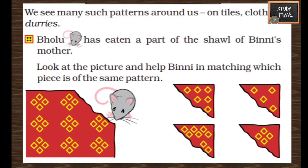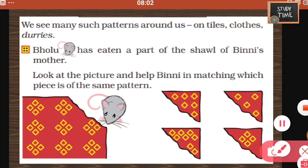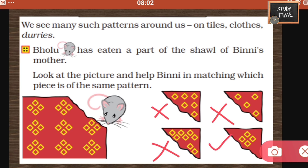We see many such patterns around us on tiles, clothes, and dresses. A rat has eaten a part of the shawl of Binni's mother. Look at the picture and help Binni match which piece has the same pattern. Whenever a pattern question is asked, first observe the given pattern, then start exploring the next. In the given pattern, you can see four diamonds arranged in a diamond shape. This is not matching, this is not matching, this is not matching — so this is the correct answer.